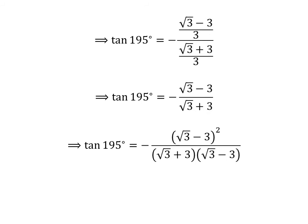Let us rationalize the fraction. Multiplying the numerator and the denominator by a common factor does not change the value of the fraction. So, let us multiply the numerator and the denominator of the above fraction by square root of 3 minus 3. We get tangent of 195 degrees is equal to minus the square of square root of 3 minus 3, upon square root of 3 plus 3 times square root of 3 minus 3.